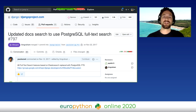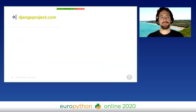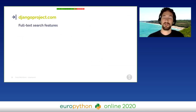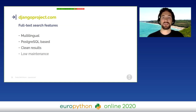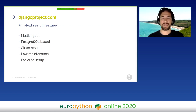That was the first of other merged pull requests in the same full-text search function. So today, after a few years, the Django website full-text search is multilingual, is based only on Postgres, it returns clean results, it's a low-maintenance solution, and it's way easier to set up than before, also locally.